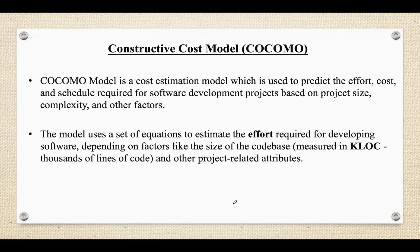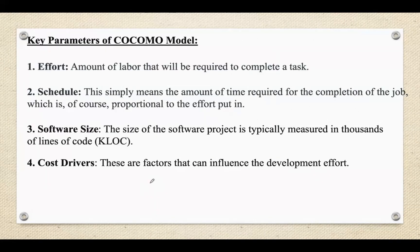The model uses a set of equations to estimate the effort required for developing the software, based on factors like the size of the code base measured in thousands of lines of code, as well as other project-related attributes. Key parameters of the COCOMO Model include several key parameters to estimate the effort, cost, and schedule of software projects. These parameters are essential for calculating the project size, cost drivers, and adjusting the effort based on various influencing factors.